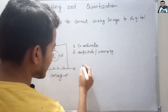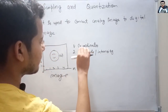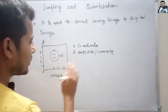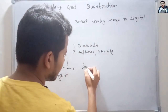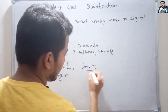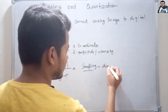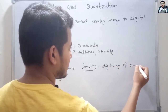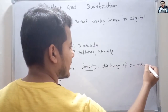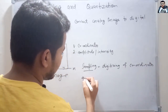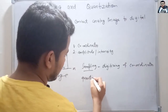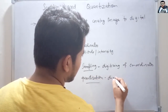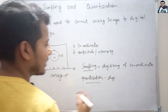Sampling is the process of digitizing the coordinates of an analog image. Quantization is the process of digitizing the intensity or amplitude of the analog image.